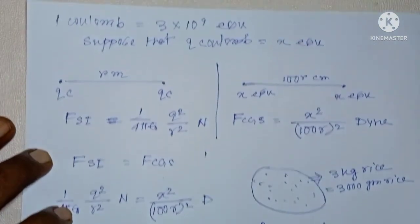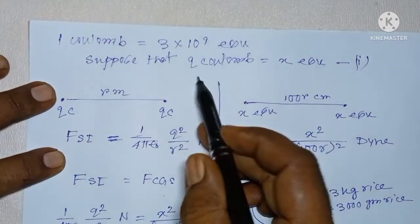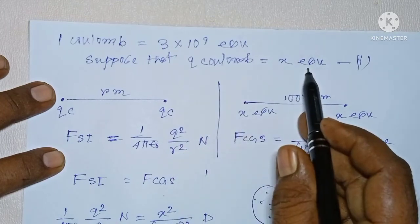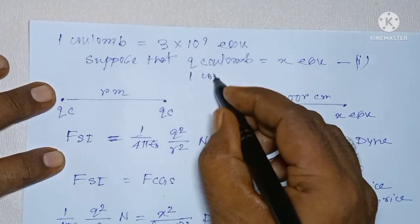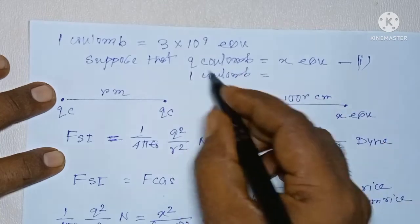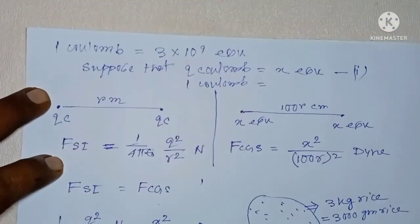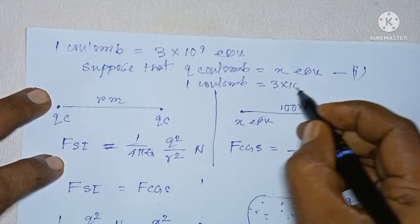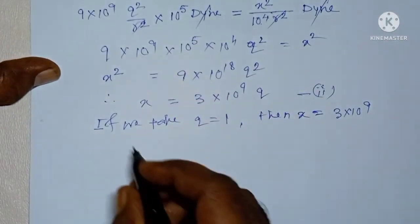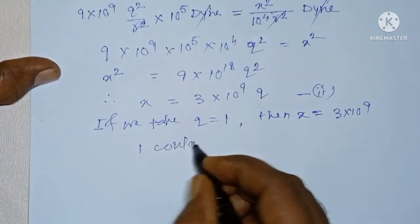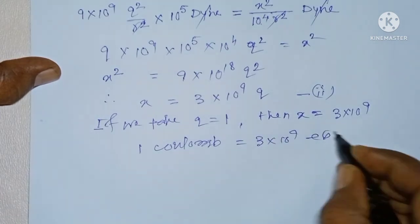Now, come back to the equation number 1. We have supposed that Q Coulomb equals to X ESU. Now, if Q equals to 1, then X is 3 into 10 to the power 9. We will put here the value of X here, 3 into 10 to the power 9 ESU. So, it has been easily proved that 1 Coulomb equals to 3 into 10 to the power 9 ESU.